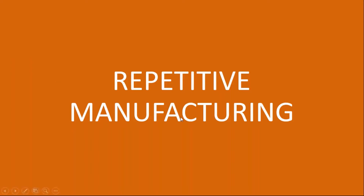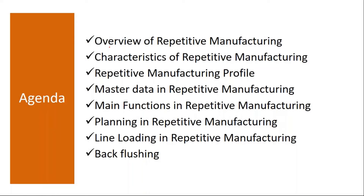The topics we are going to cover are: overview of repetitive manufacturing, characteristics of repetitive manufacturing, repetitive manufacturing profile, master data in repetitive manufacturing, main functions in repetitive manufacturing, planning in repetitive manufacturing, line loading, and then backflushing, confirmation — that is Goods Issue, confirmation and GR — that activity in repetitive manufacturing.